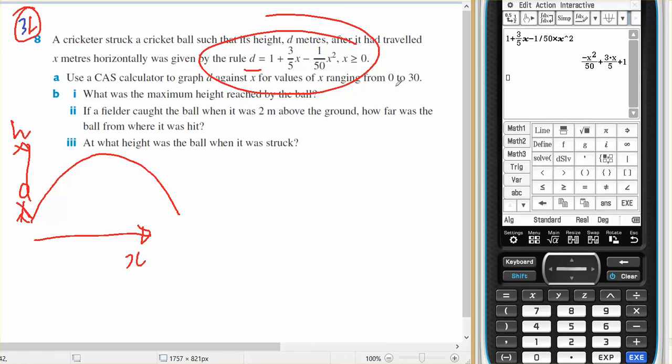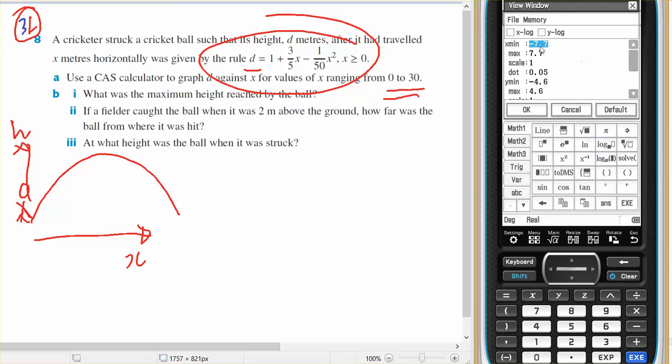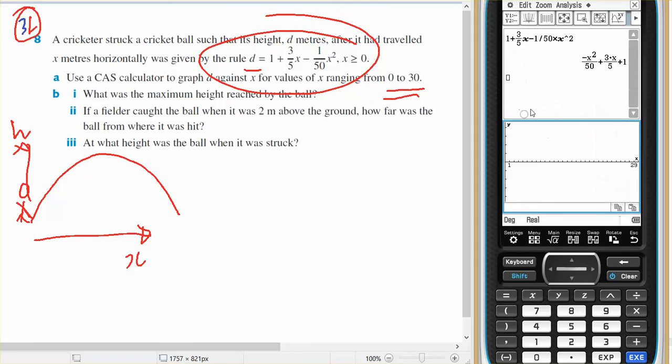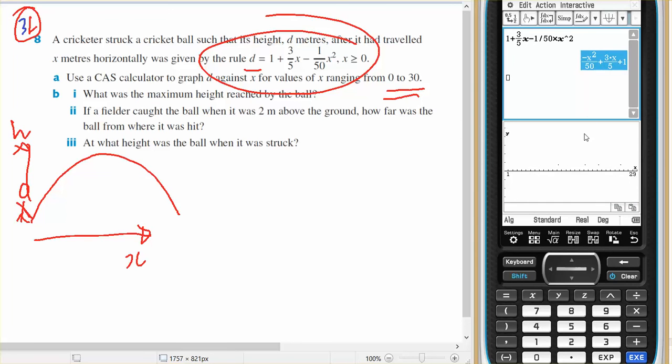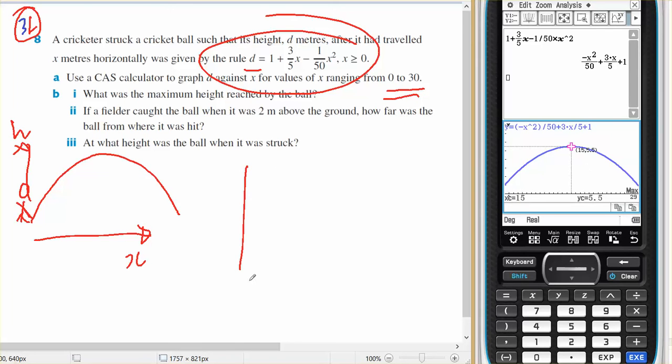Use your calculator to graph from 0 to 30. OK, so here's my calculator. I've entered it. Open up a window. I wish to go from 0 to 30. OK, analysis, G-Solve maximum is 15 and 5.5. So I need to draw my graph.